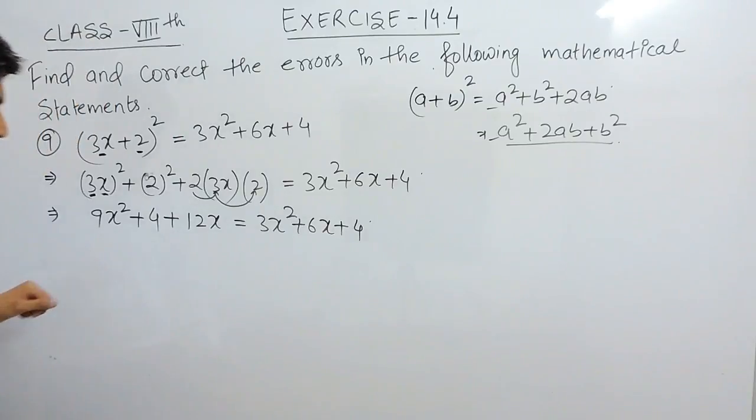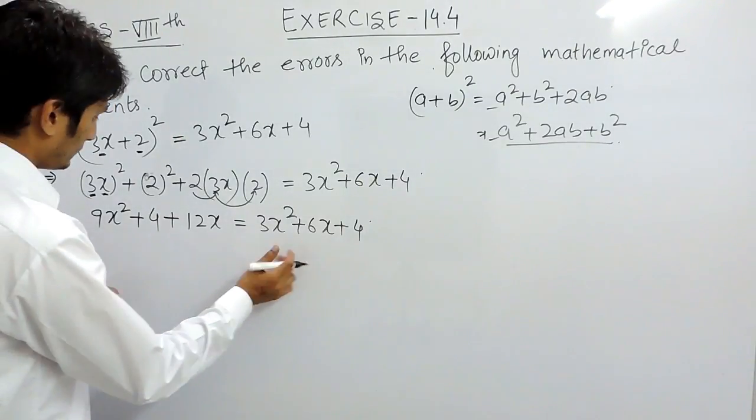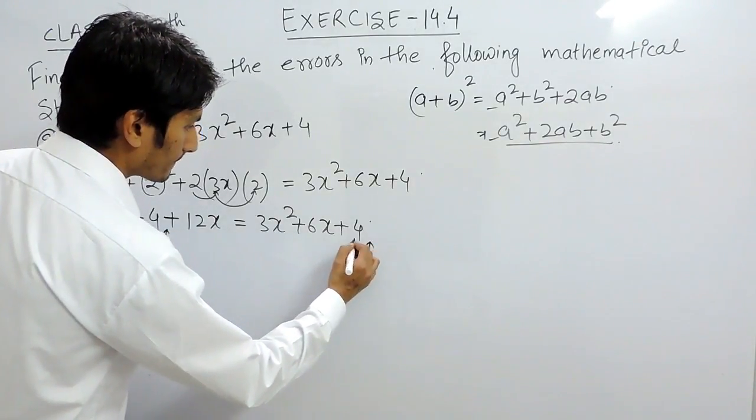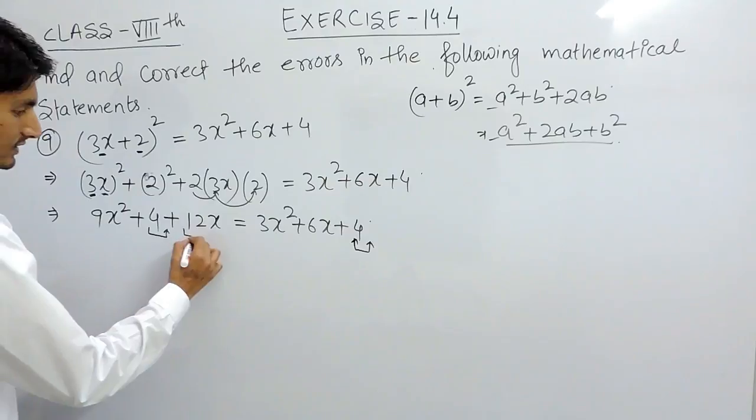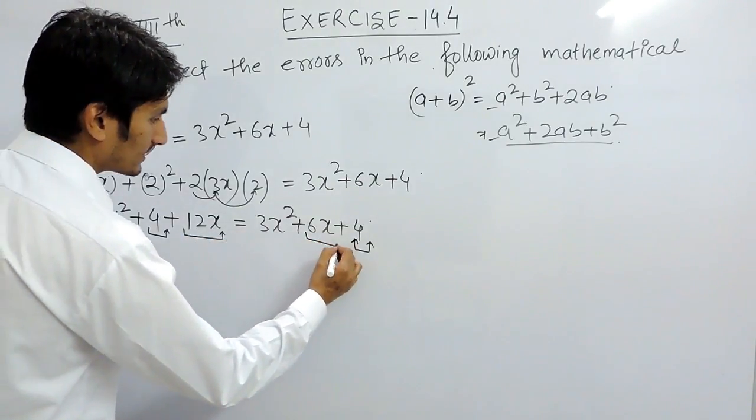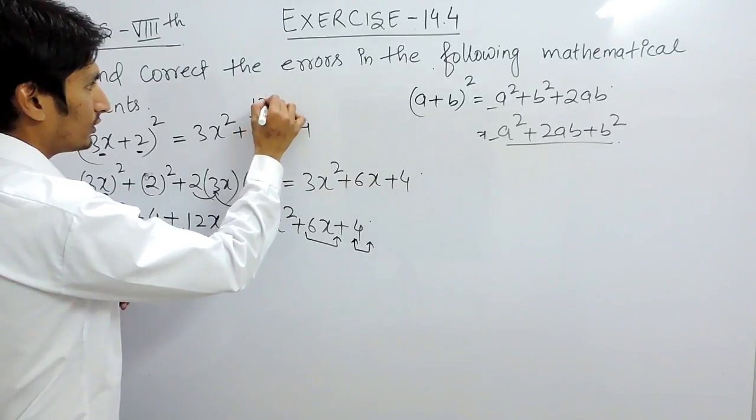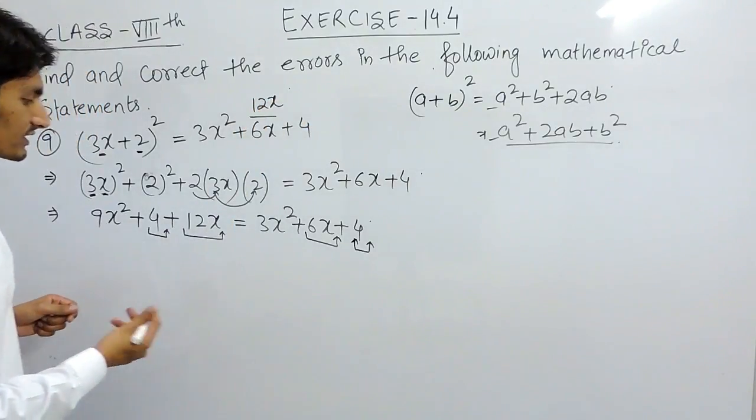So in this case, this is 4, this is 4, the same as 4 here. It is 12x, so here it is 6x. In place of 6x it should be 12x. So this is the first error.